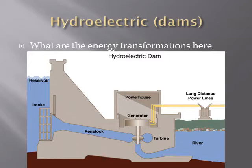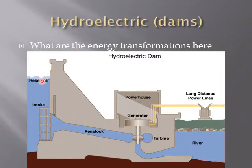Hydroelectric involves dams. You store up a bunch of water behind the dam, let it through, and that water spins a turbine which spins a generator which produces electricity. The energy transformations are: water stored up high has gravitational energy, as it comes down it gains kinetic energy, which spins the turbine, which creates electrical energy.